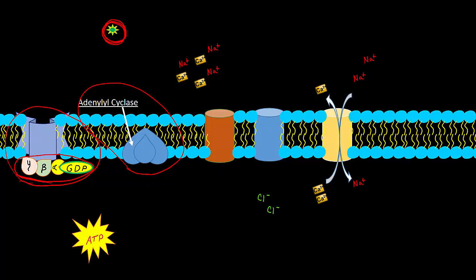Next up we have our cyclical AMP gated cation channel which allows sodium and calcium to come into the cell.